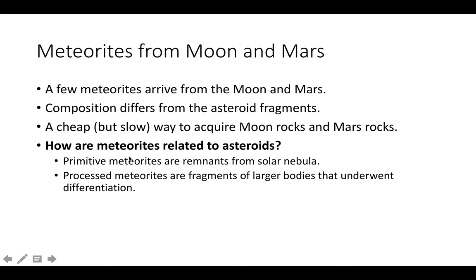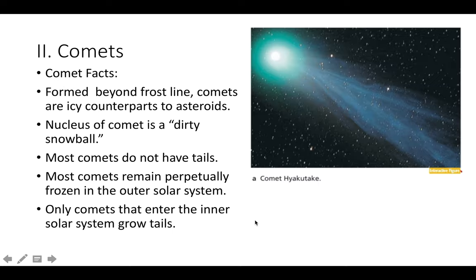So how do meteorites relate to asteroids? Primitive meteorites are remnants from the solar nebula, and processed meteorites are fragments of larger bodies that underwent differentiation.